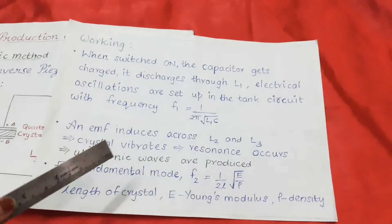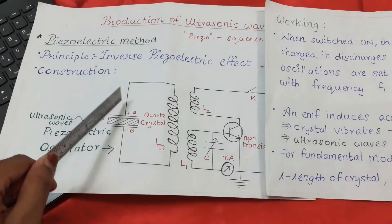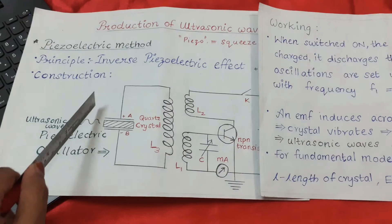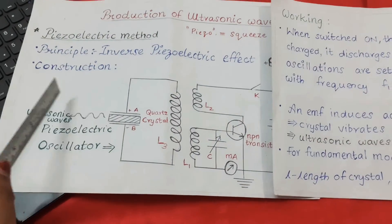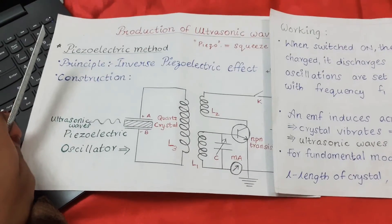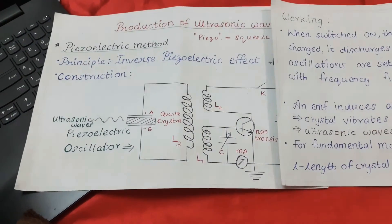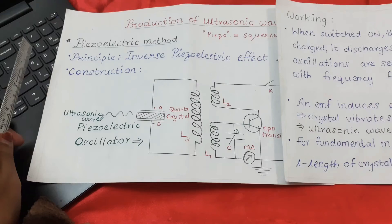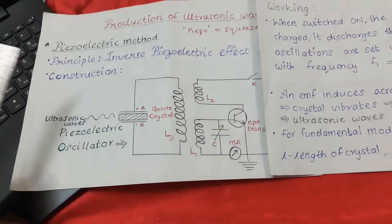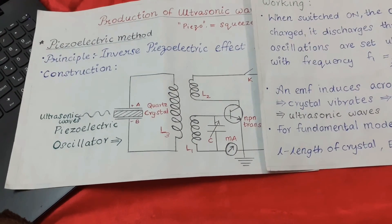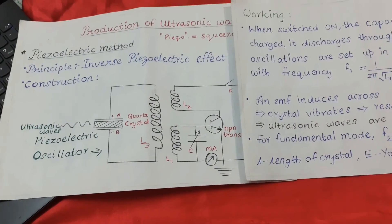At resonance, the crystal starts to vibrate with maximum amplitude, and hence the surrounding medium particles also start to vibrate with the same frequency and maximum amplitude — thus generating ultrasonic waves. Piezoelectric generators are very efficient and compact, and can be fabricated to operate at any frequency in the entire ultrasonic frequency range. This is the main advantage of the piezoelectric method.